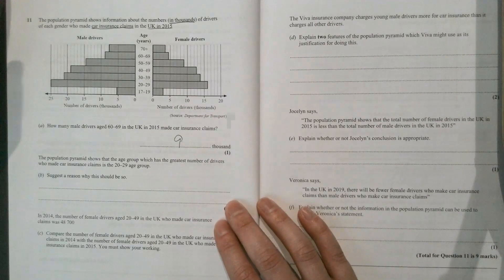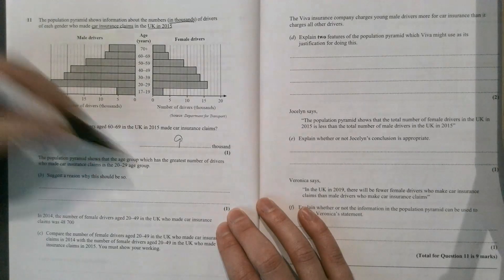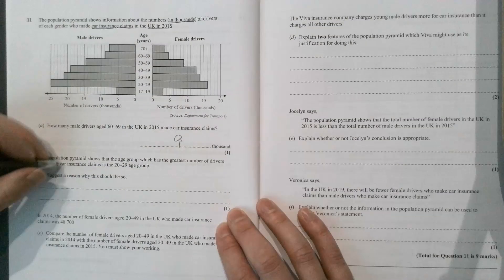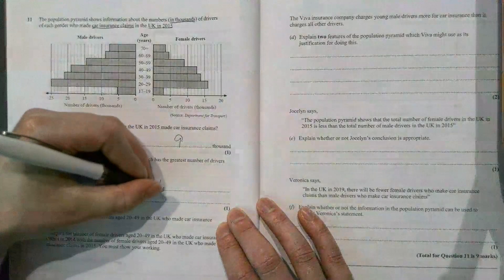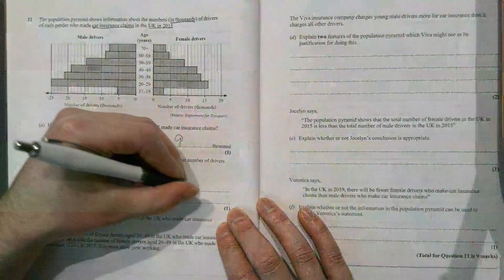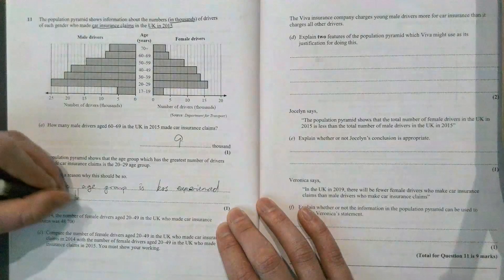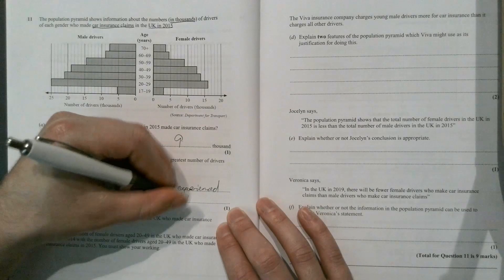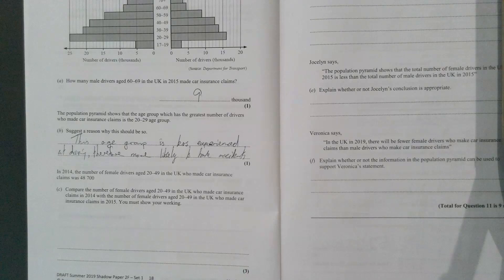The population pyramid shows that the age group which has the greatest number of drivers who made car insurance claims is the 20-29 age group. Suggest a reason why this should be so. Simply put here, this age group is less experienced at driving, therefore more likely to have accidents. That's all we need to say.